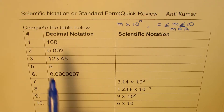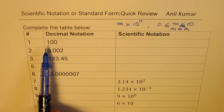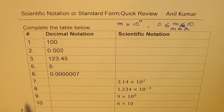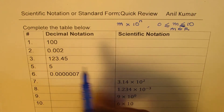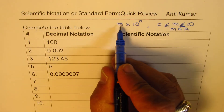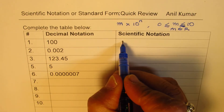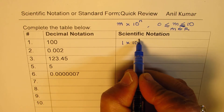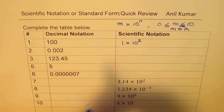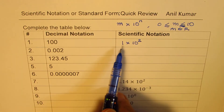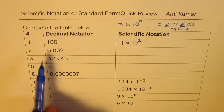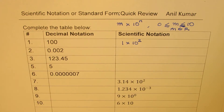Let's begin with the very first one, which is 100. 100 can be treated as 1 times 10 squared, that is 10 to the power of 2. So that becomes the scientific notation for 100.